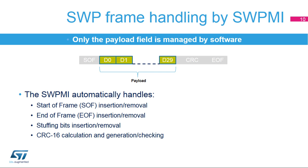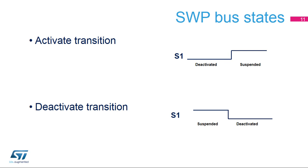In this way, software just has to manage payload data. Several states are defined for the SWP bus. In deactivated state, the S1 signal is at a low level. Before starting any communication, the master must raise the S1 signal to high level to set the SWP in suspended state. Once communication is no longer required, the SWP can be deactivated by the master.